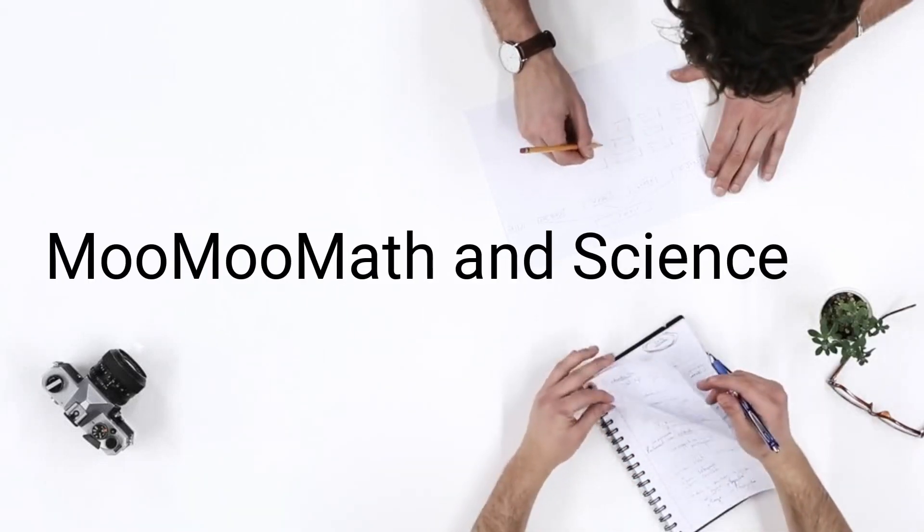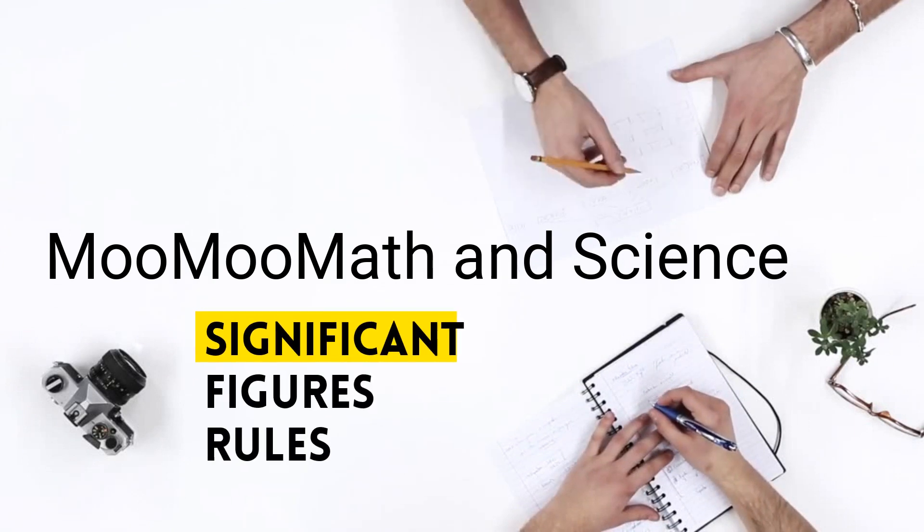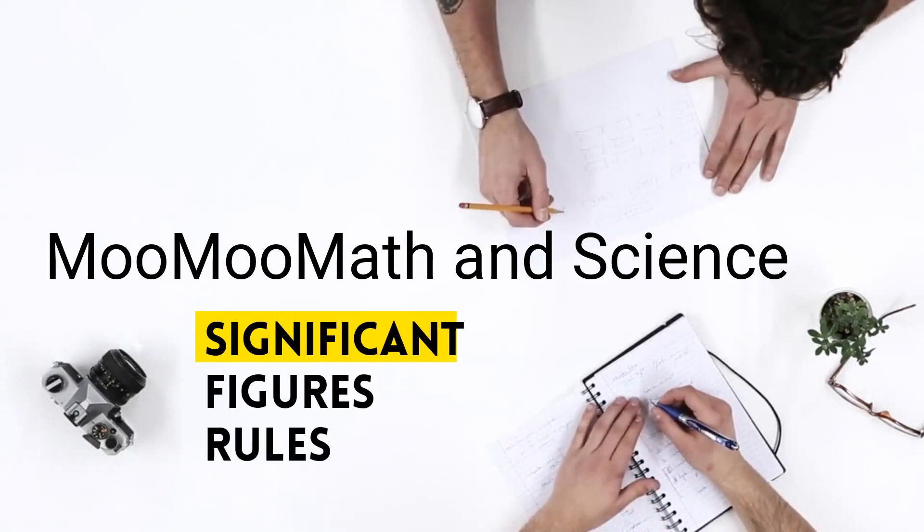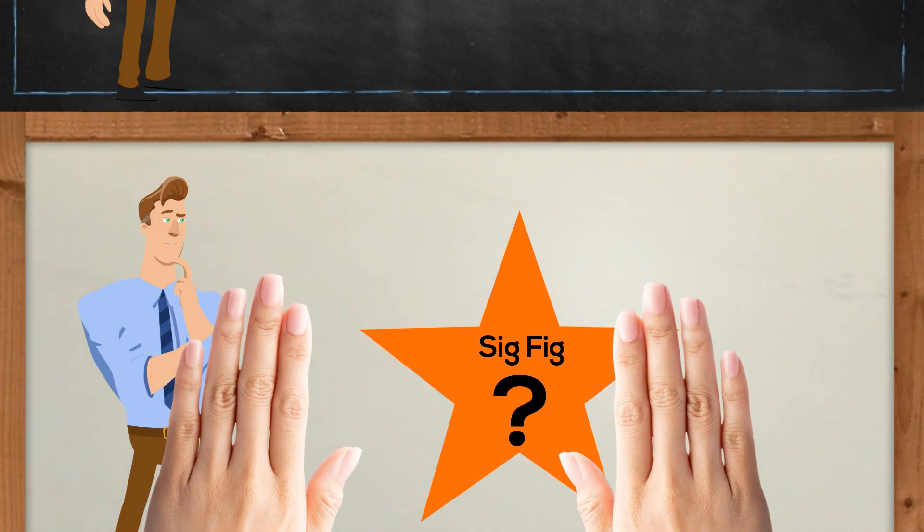Welcome to Moomoo Math and Science and Rules for Significant Figures. Significant figures can be frustrating in science and chemistry, but if you look at the rules it can be fairly straightforward. Let's first go over the rules and then look at a couple examples.